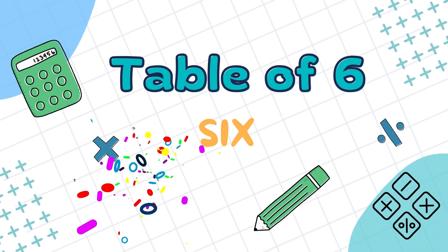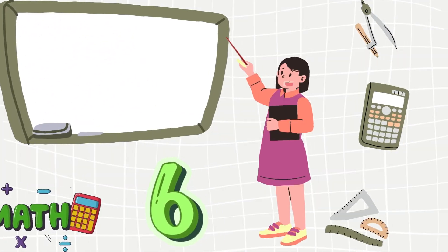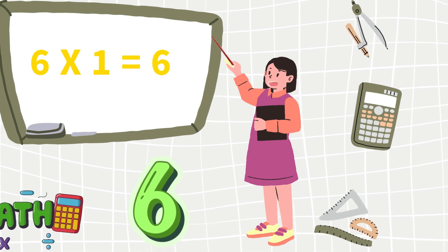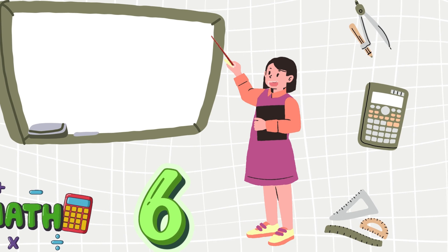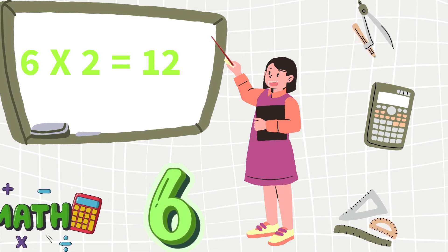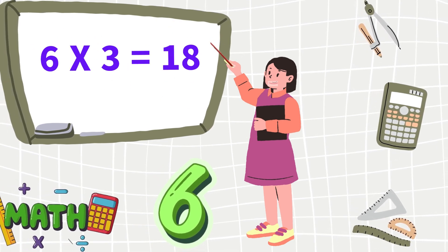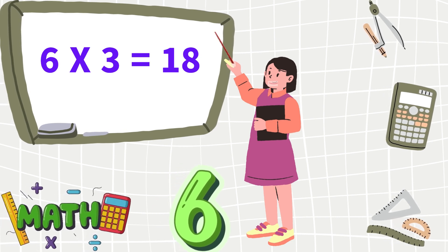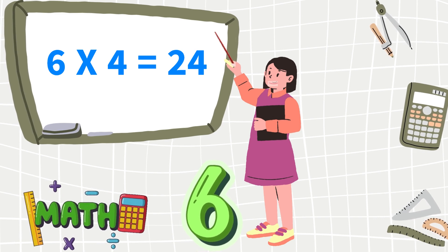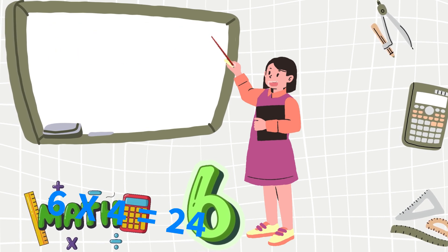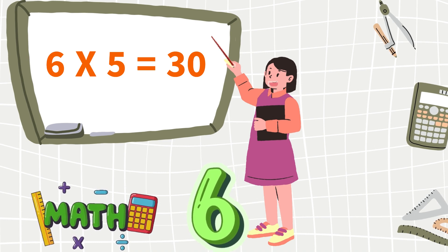Table of 6. 6 ones are 6, 6 twos are 12, 6 threes are 18, 6 fours are 24, 6 fives are 30.